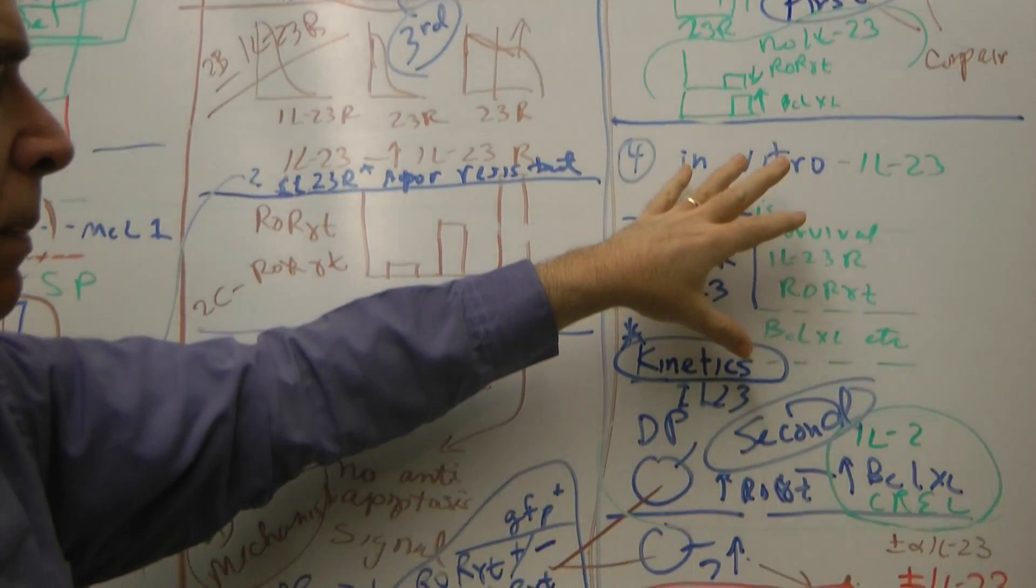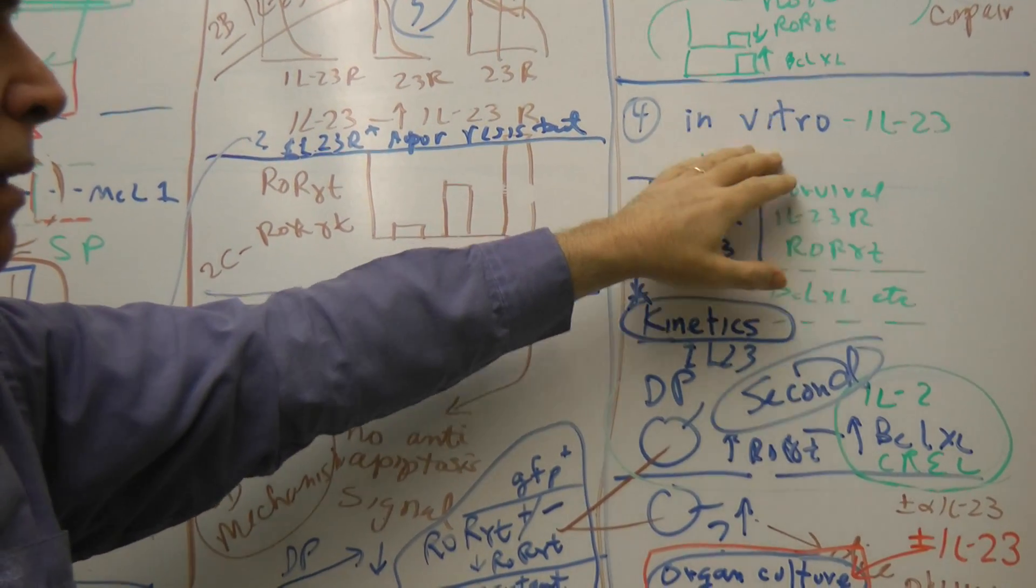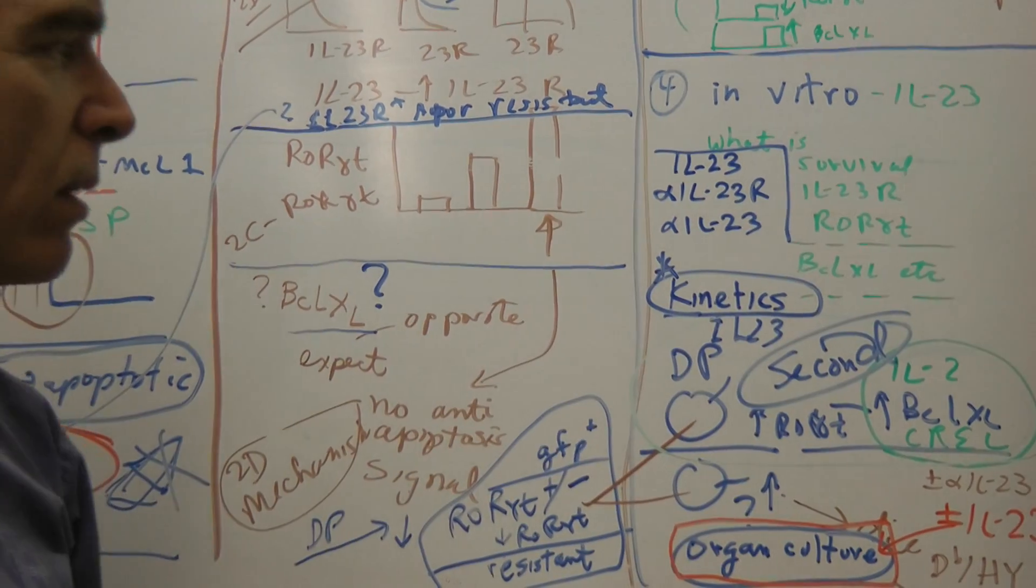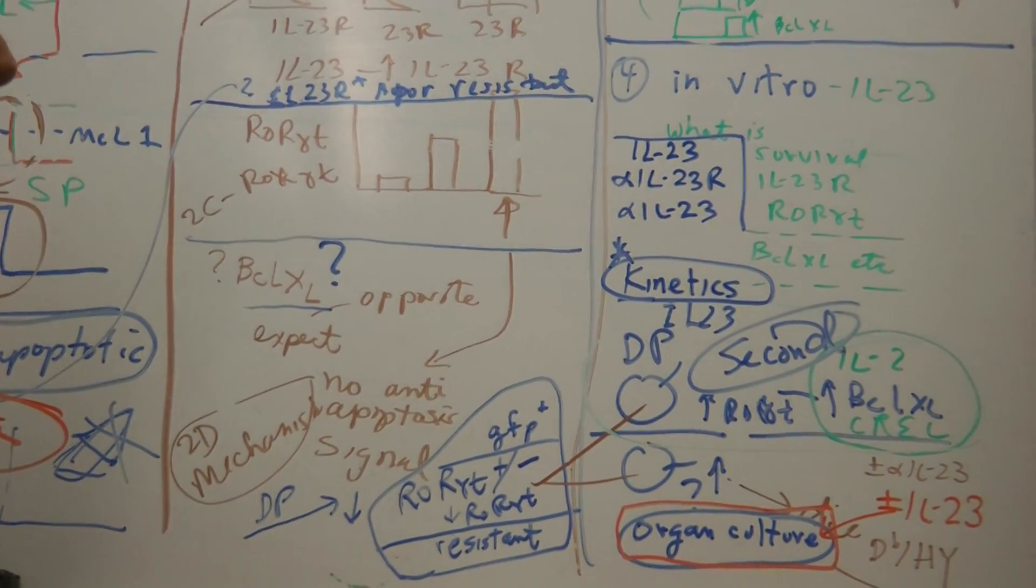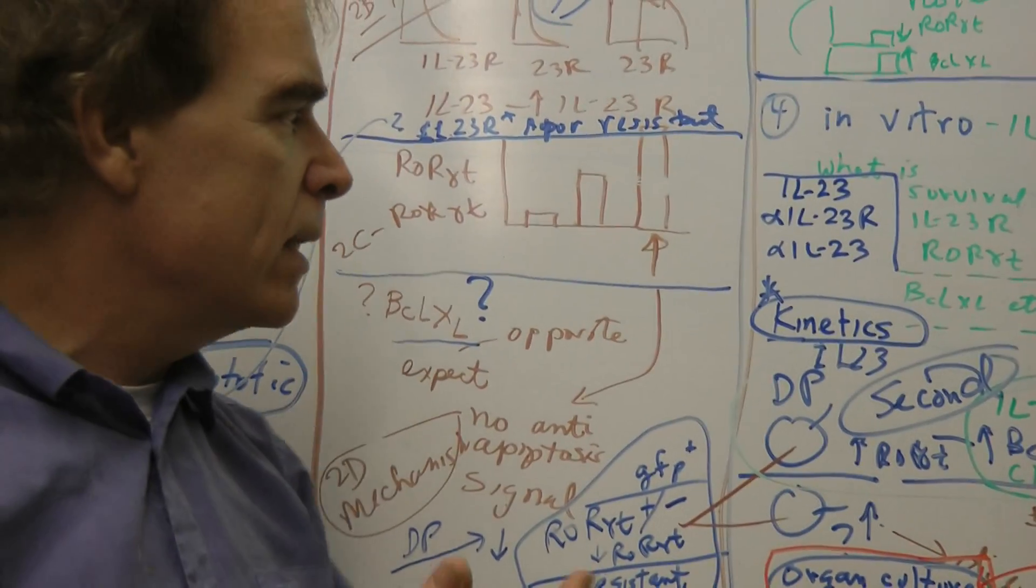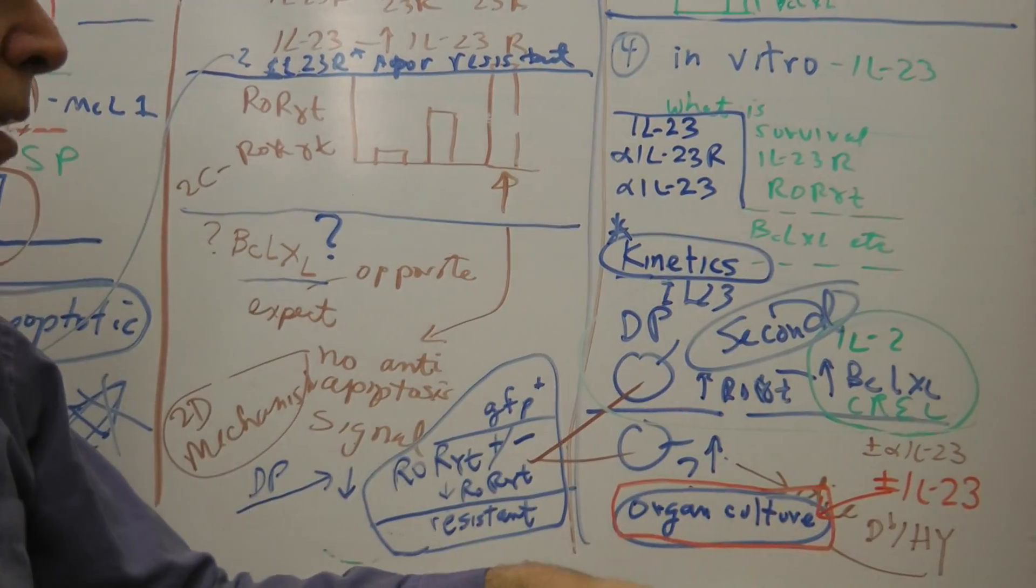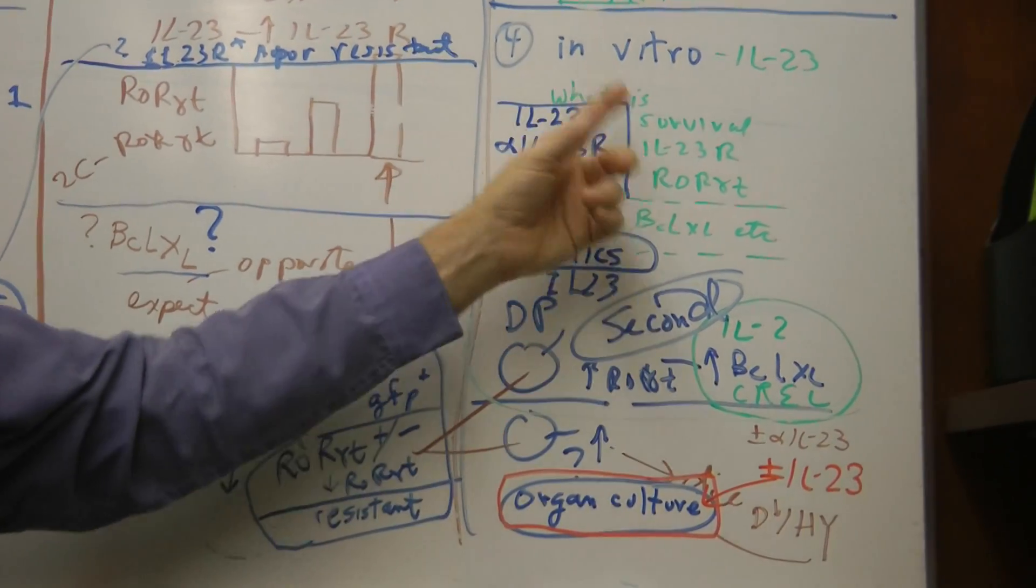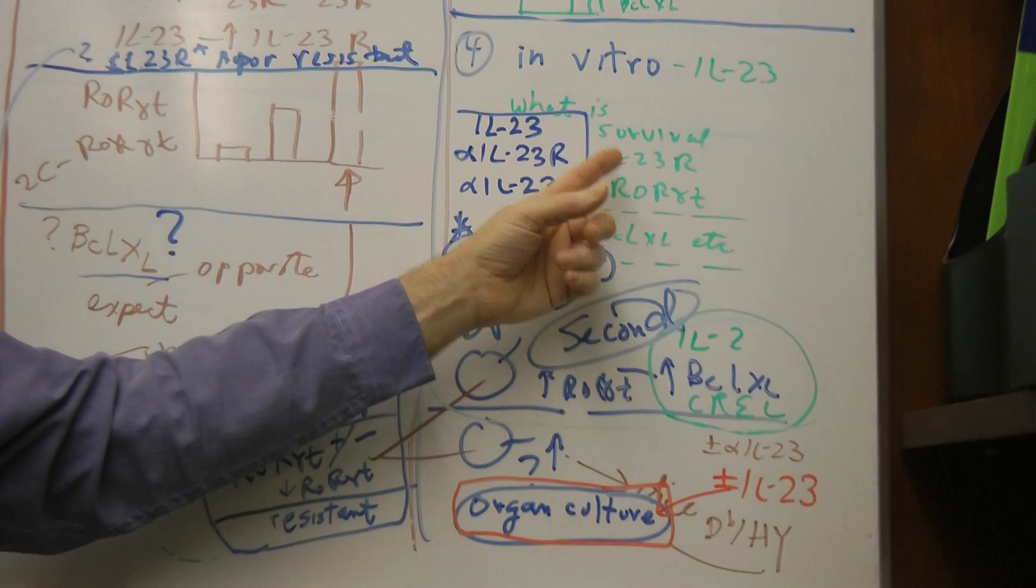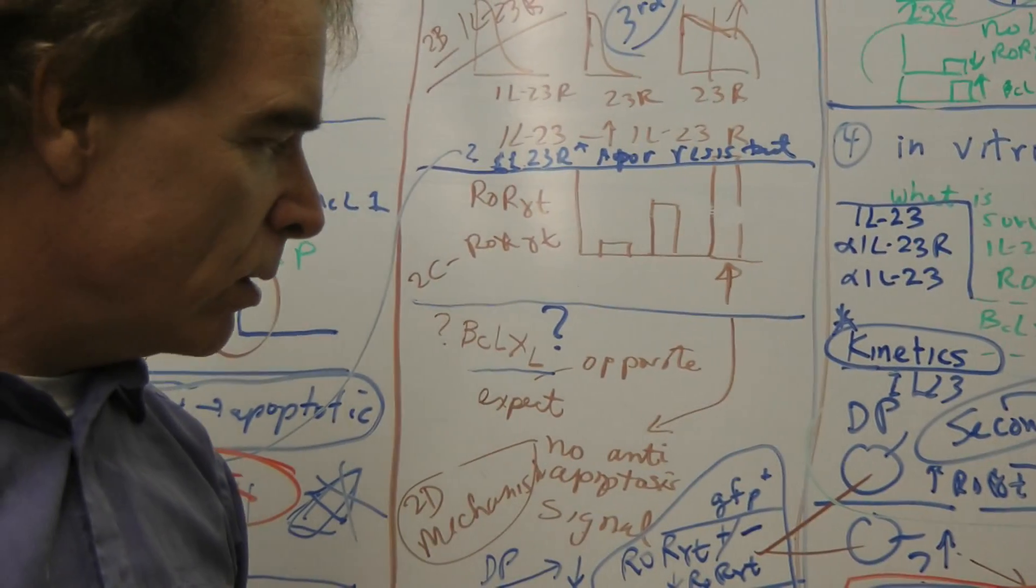Now the other thing, the other way to look at it is the third system is in vitro IL-23. Just take your cells and incubate them with IL-23. And does it increase IL-23 receptor on thymocytes? Does that lead to higher ROR gamma T? And then what does that do to apoptosis and BCL-XL? I should say apoptosis is first. IL-23 receptor and ROR gamma T together. And finally whatever apoptosis molecules are.